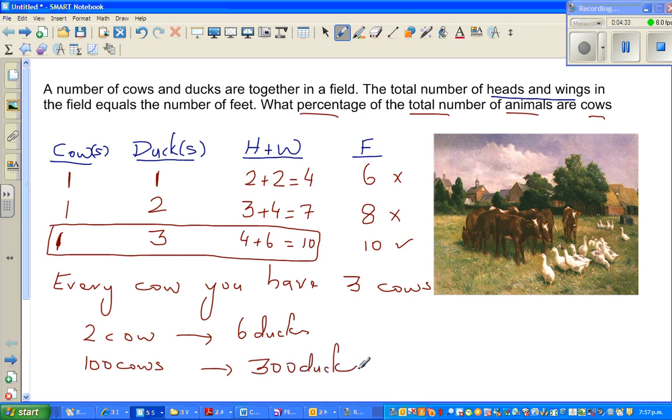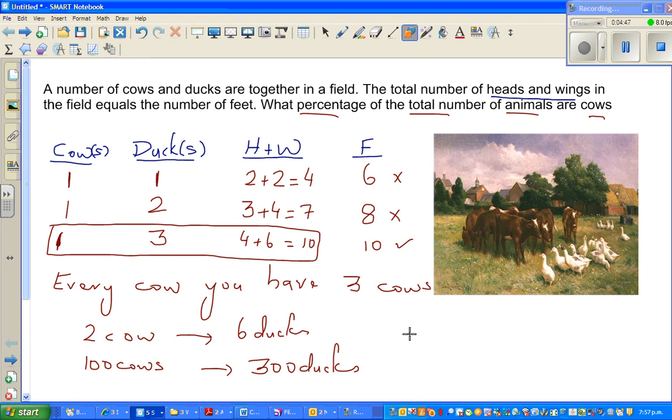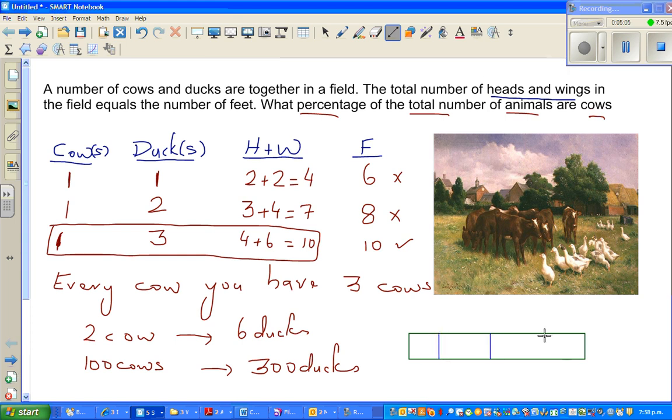Now let's answer the question. What percent of the total number of animals are cows? So let me draw a rectangle to explain that. These are the four animals. If you're looking, focusing, there are four animals. So I'm going to divide this into four equal parts. So this is one part. This is half, exactly half. And then again, half here and half here.